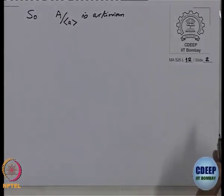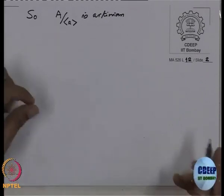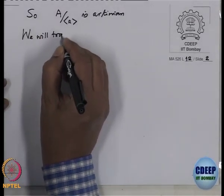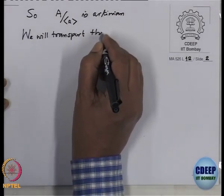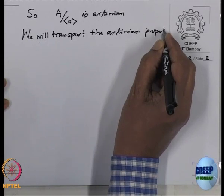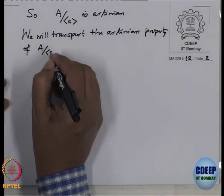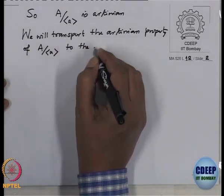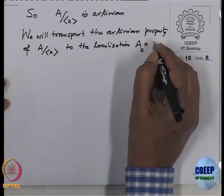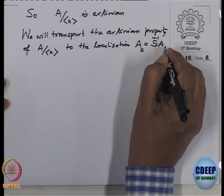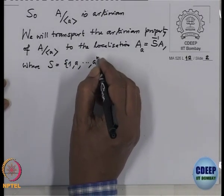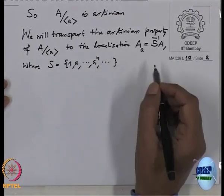I want to use this Artinian fact to prove that the height of P is less than or equal to 1. We will transport the Artinian property of this residue class ring to the localization A_a — that is, the localization of A at the multiplicative set generated by a: S = {1, a, a², ...}. We take this localization. See, we have two natural maps: from A to A/(a) the residue map, and from A to A_a the natural inclusion map iota, sending b to b/1. Both are ring homomorphisms.